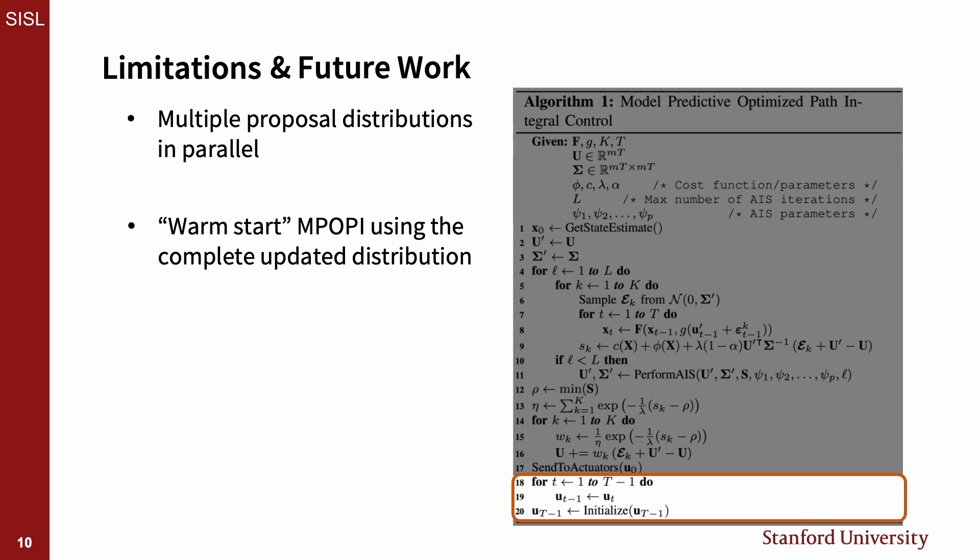Another potential extension is to reuse the full updated distribution to warm start MPOPI at the next time step. Instead of rolling over just the mean, we could roll over the full distribution and potentially increase convergence and not need l updates in subsequent steps.